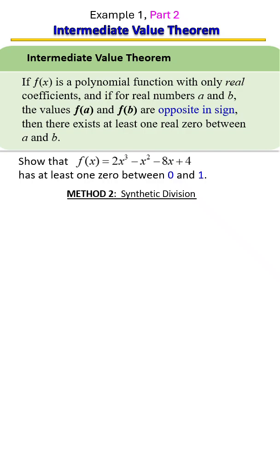Continuing on with the same problem, in step one we did the plug-in method and now we're going to do the synthetic division method. You'll see we're going to get the same results. We want to show that this polynomial has at least one zero between zero and one.